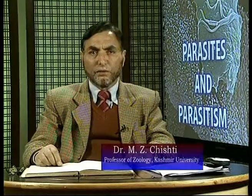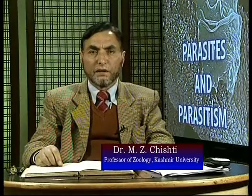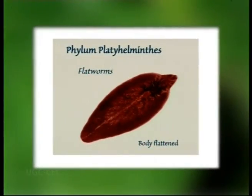We have been continuing the studies of the Cestoda, and we have taken up some cestodes, described them like Taenia solium, Taenia saginata, Multiceps multiceps, and Echinococcus granulosus. These animals, Platyhelminthes, are flatworms, triploblastic in nature, and they are mostly parasitic in origin.